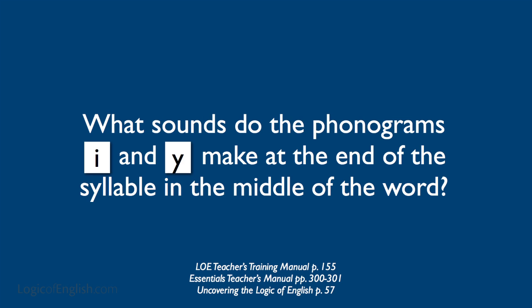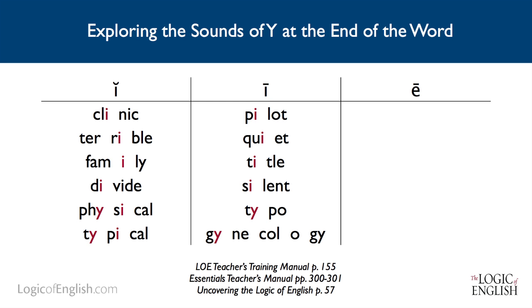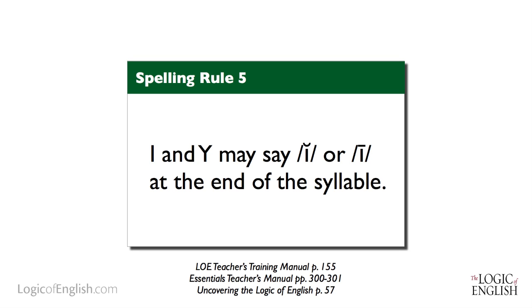All right, let's go a little deeper with I and Y. What sounds do I and Y make at the end of the syllable but in the middle of the word? We have clinic — I is saying I. In terrible, it's saying I. Family, it's saying I. In physical, the Y is saying I, or in typical. Y may say I at the end of the syllable in the middle of the word. What is it saying in pilot, quiet, title, silent, typo? Here I and Y are saying the long I sound. So the rule is that I and Y may say I or I at the end of the syllable. This accounts for what's really happening in English and is a little more complex than the other vowels.